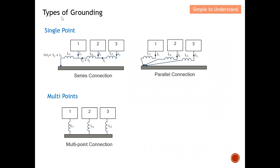Let's understand what the different types of grounding are. From here you can see that there are mainly two types of grounding. One is called single point, and another one is called multiple point. Single point means that on the whole ground plane, you only have one single point that is actually grounded. On the multiple point diagram, you can see that there can be more than one point that is grounded. We are going to take a closer look on the next few slides.